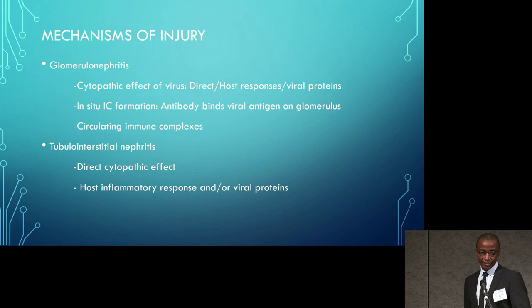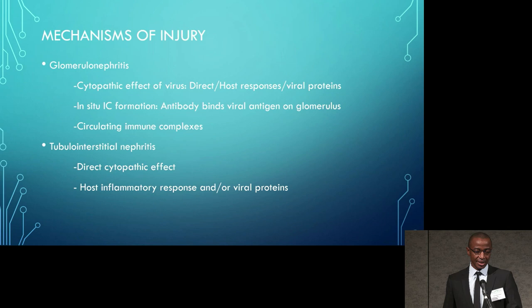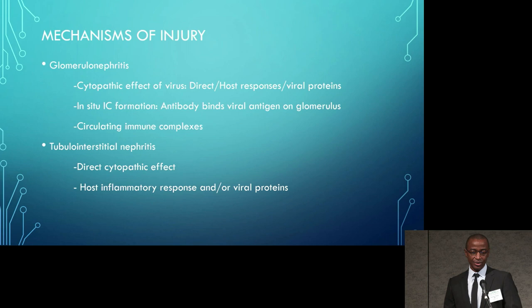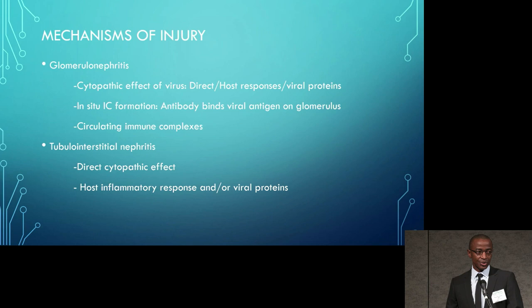The mechanisms of injury when thinking about kidney disease are primarily focused on two areas: glomerulonephritis and tubular interstitial nephritis. In the glomerulus, injury mechanisms include the cytopathic effect of the virus — either from direct viral invasion or host responses leading to programmed cell death — as well as in situ immune complex formation and circulating immune complex deposition. Within the tubular interstitial compartment, interstitial nephritis may present due to direct cytopathic effect, host inflammatory response, or viral proteins within the interstitium.